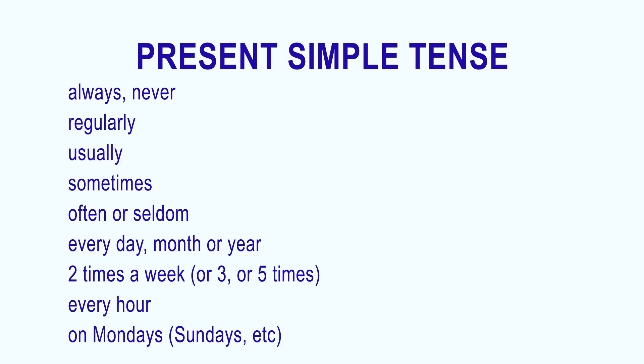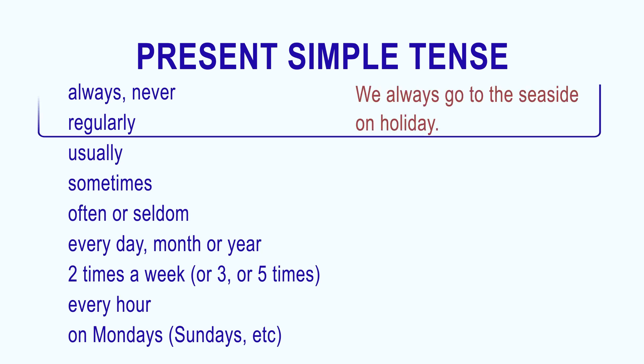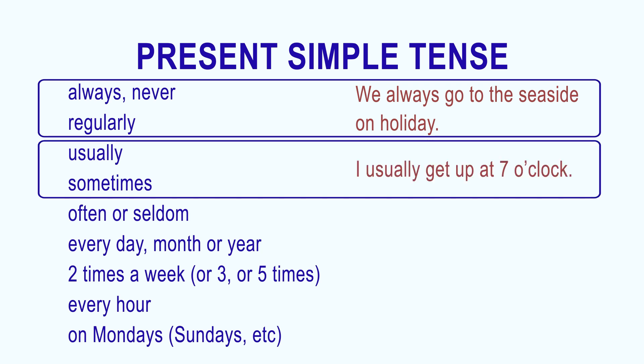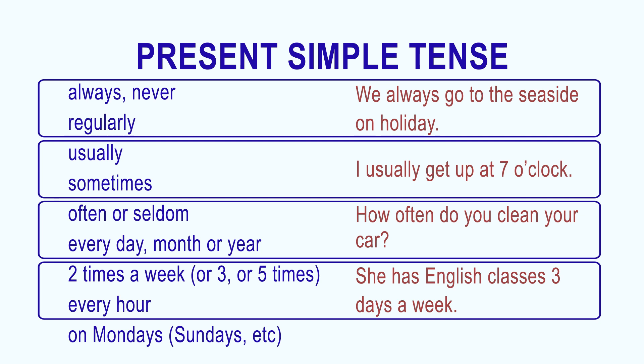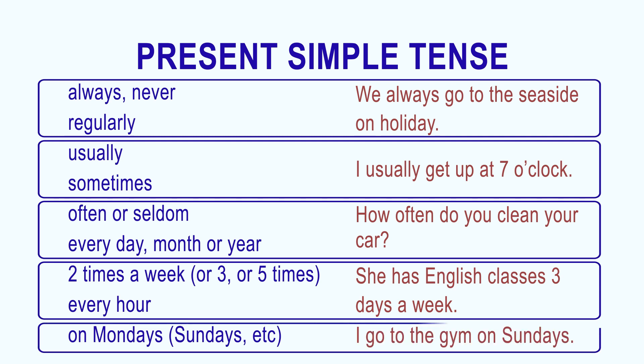Here are some examples. We always go to the seaside on holiday. I usually get up at seven o'clock. How often do you clean your car? She has English classes three days a week. I go to the gym on Sundays.